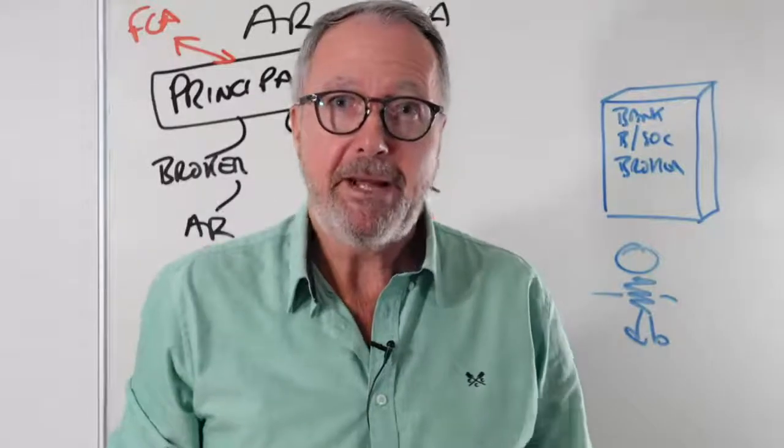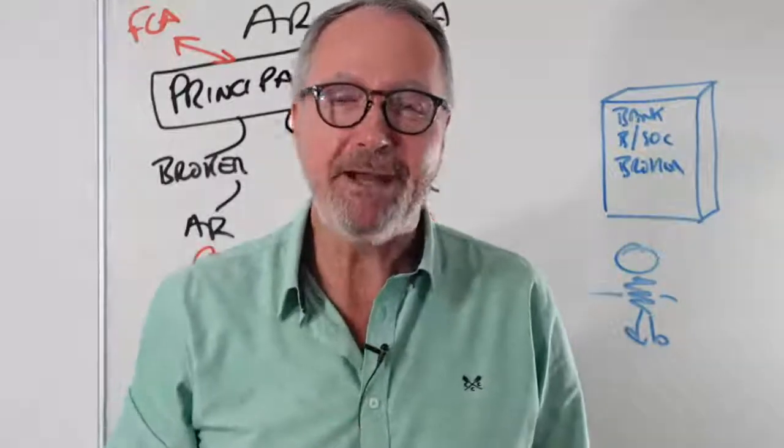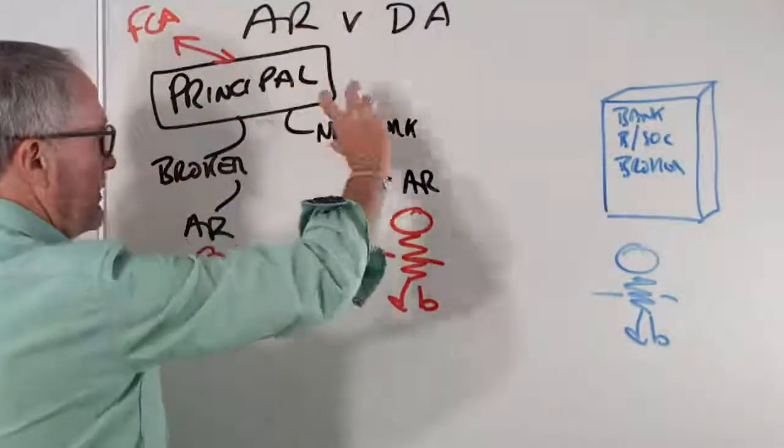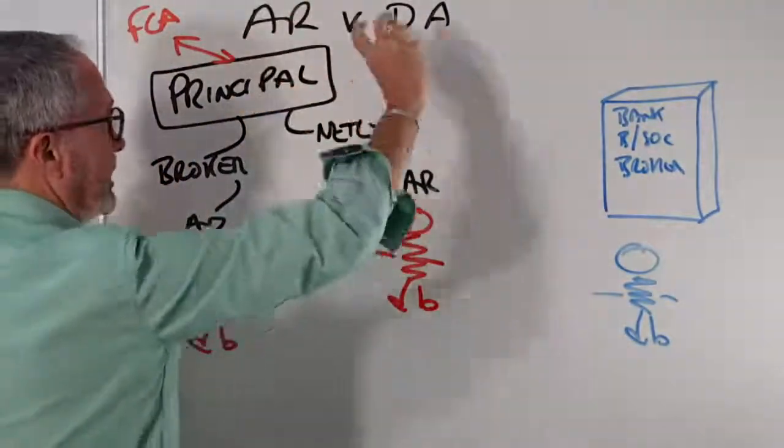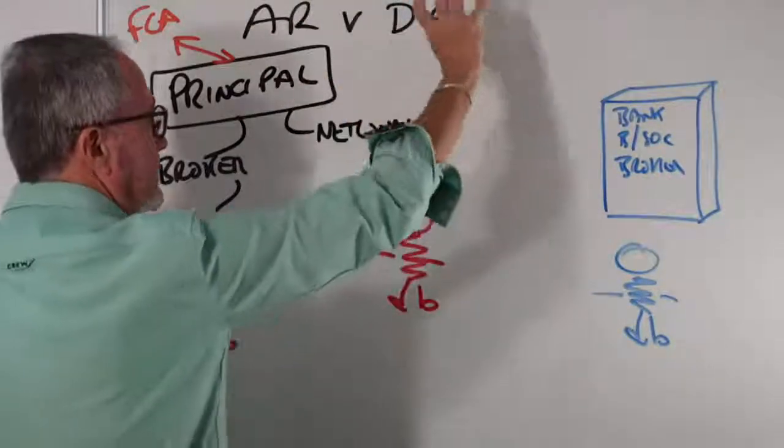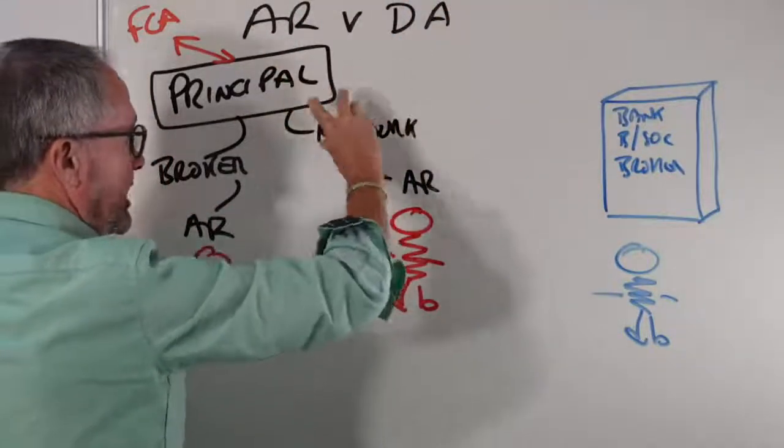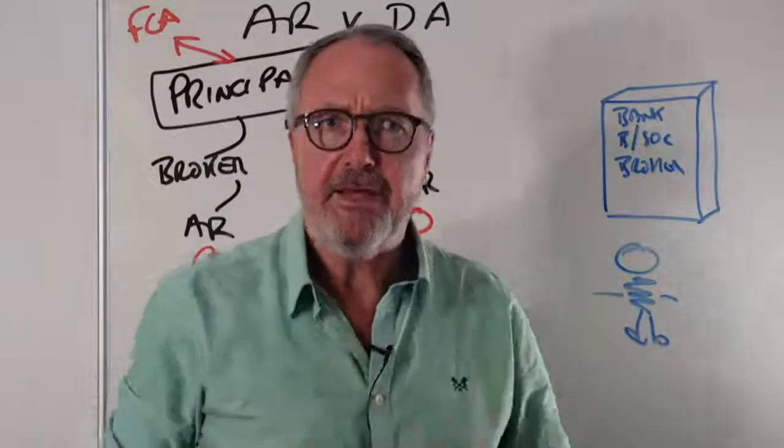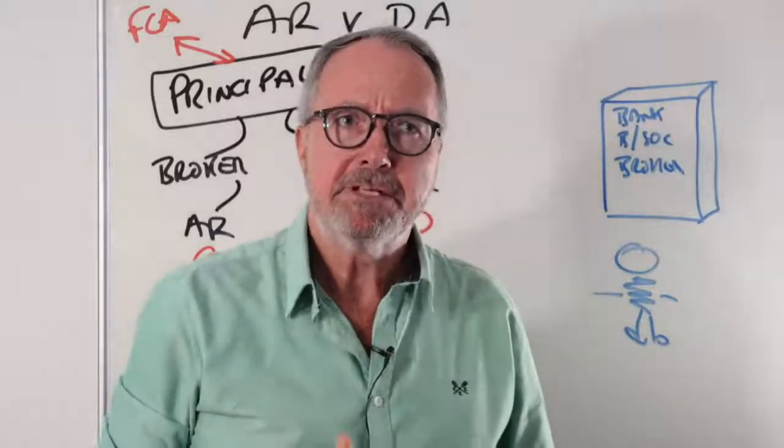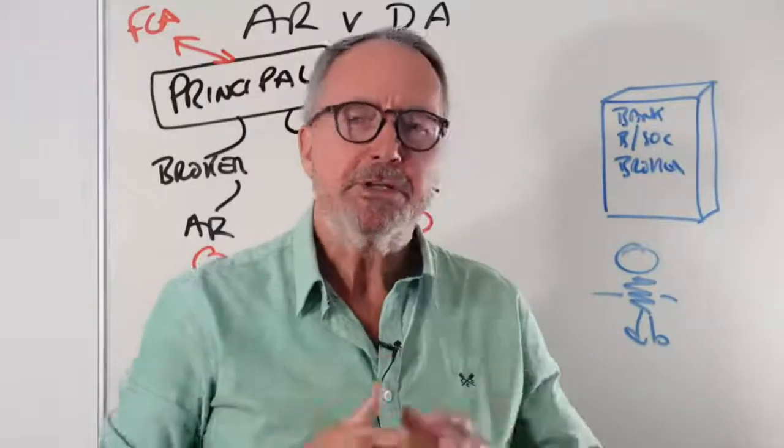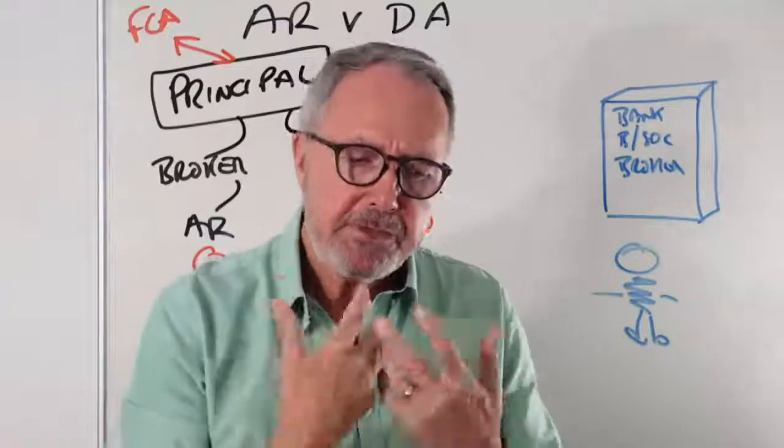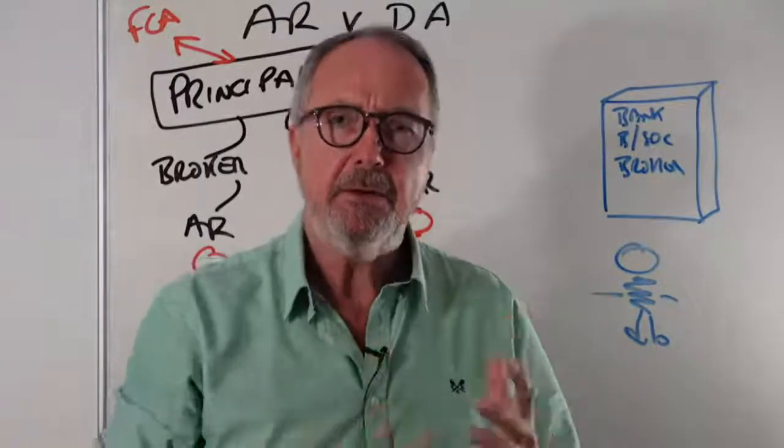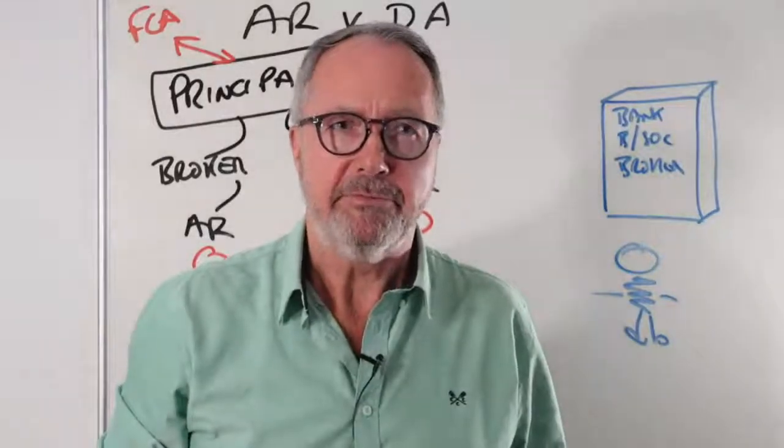They're responsible for support, advice, experience, general day-to-day running as well. They're also responsible for paying you the dosh. They pay you proc fees and commissions. All the money you earn pretty much finds its way through that conduit. Lender, proc fee, network to you. Insurance company, commissions, network to you. You're going to get money from them unless obviously they're cut as well. They're responsible for T&C, training and competence, getting you on board, getting you to competent status, getting you competent advisory status, keeping you fit and proper along the way. They're responsible for that.